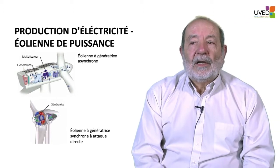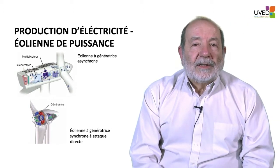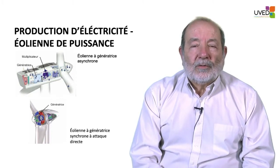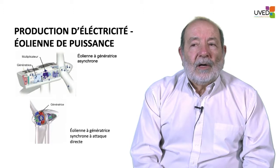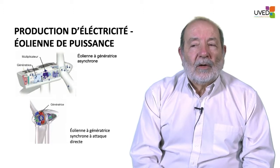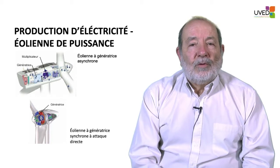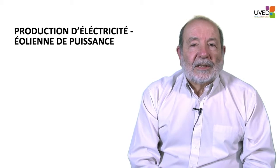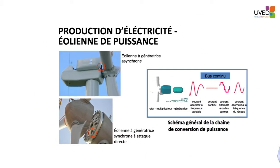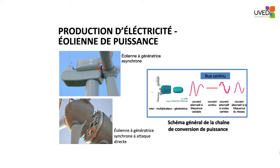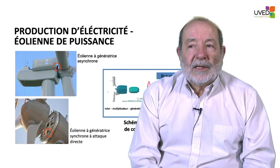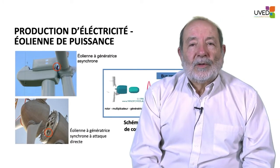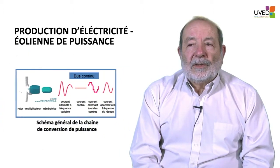The new generation windmills are equipped with a synchronous generator with direct drive. As seen in the top picture, the generator is directly connected to the rotor with no gearbox in between. In older generation windmills, the nacelle was rectangularly shaped, whereas now it is more egg-shaped — a bit like a rugby ball. The maintenance worker visible in the nacelle gives an idea of the scale.